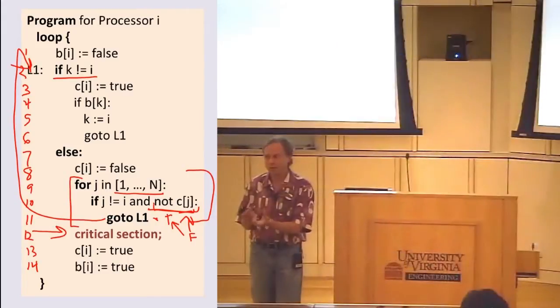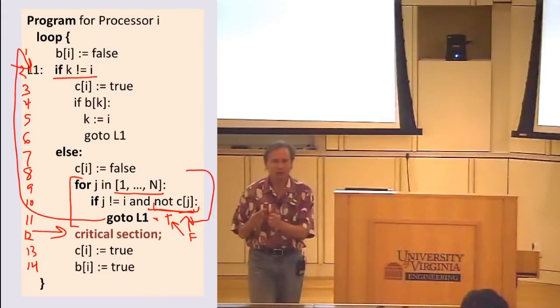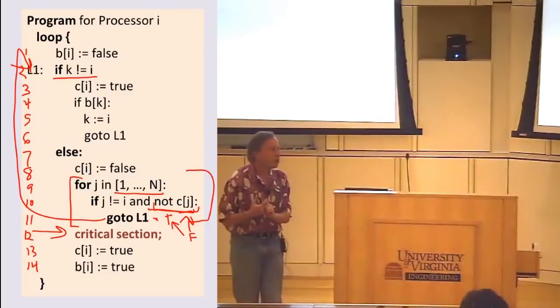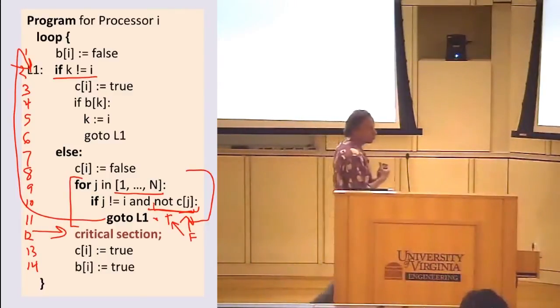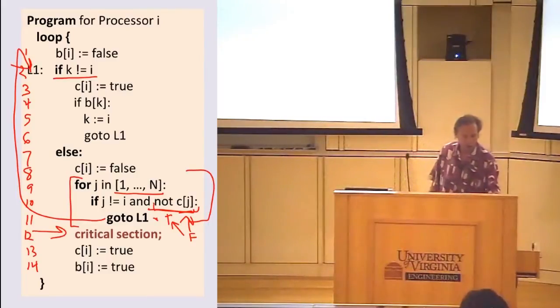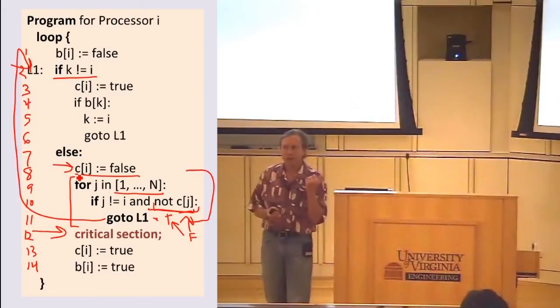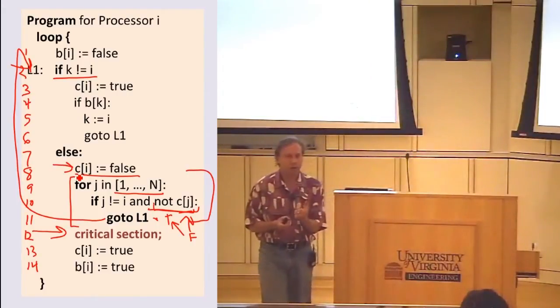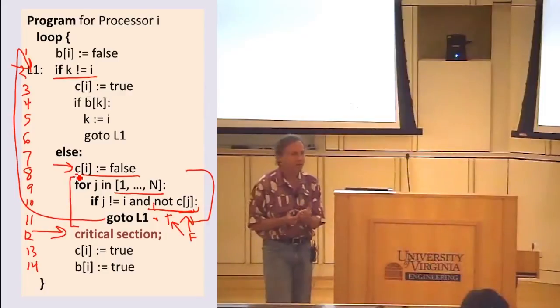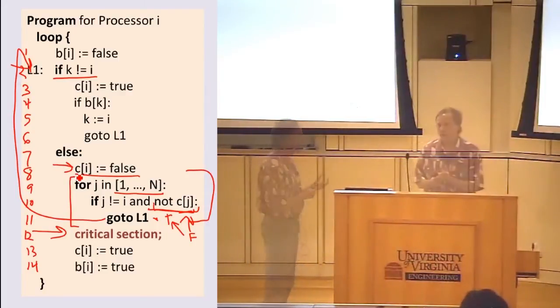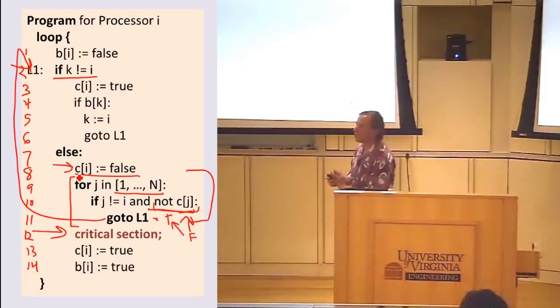So we'll only get into the critical section if all the C values are true. This is kind of counterintuitive. I think it would have made more sense if the value of true and false were switched here, that we're checking that they're all false. But the way it's written is checking that they're all true, and what we did before the loop was set our C value to false. This code only enters the critical section if no other processor has set its C value to true.